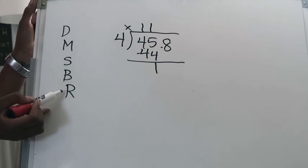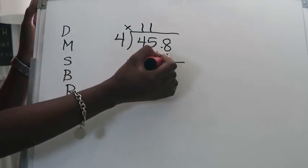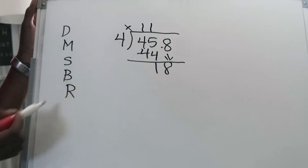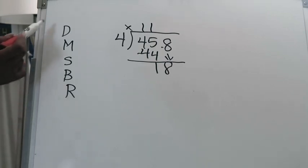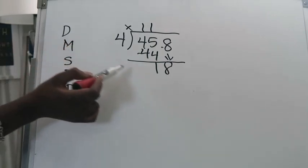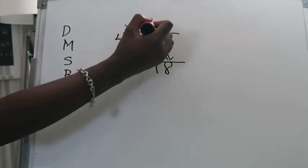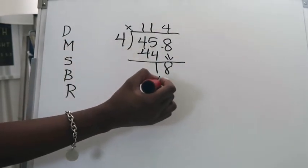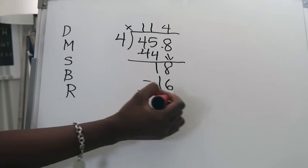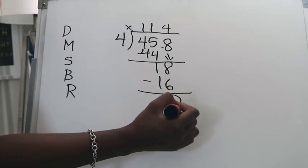I'm going to subtract 45 minus 44 is 1. I'm going to bring down this 8 right there and then I'm going to start the process over because I know that that is not a remainder. 4 can go into 18 a total of 4 times.